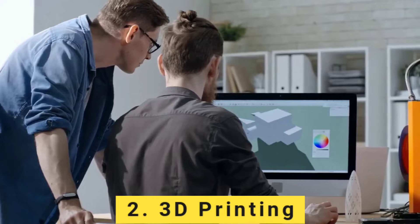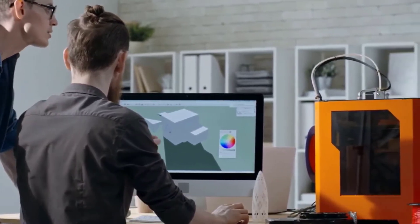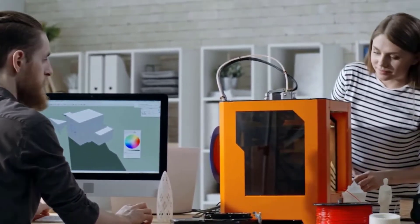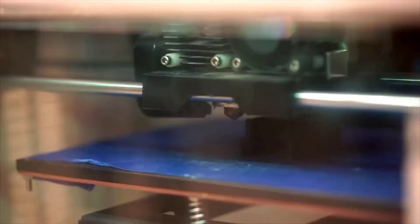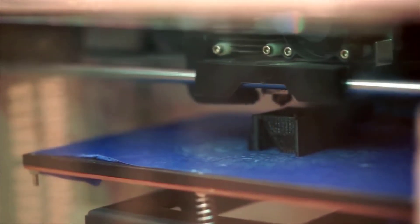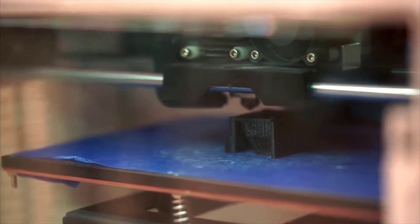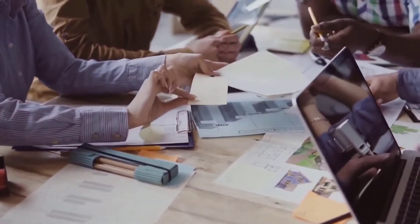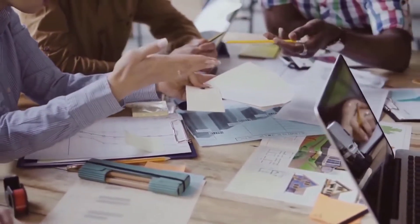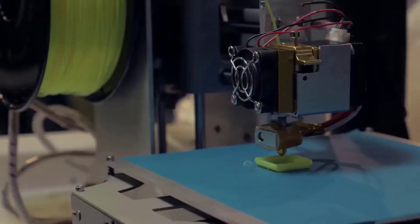Number 2: 3D printing. 3D printing is a process of making three-dimensional solid objects from a digital file. The creation of a 3D-printed object is achieved using additive processes. In an additive process, an object is created by successively adding material to it, layer by layer, until it is complete.